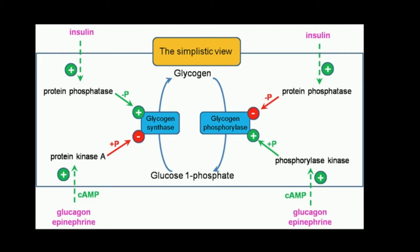It turns out that these enzymes, glycogen synthase and glycogen phosphorylase, are controlled through their phosphorylation state.